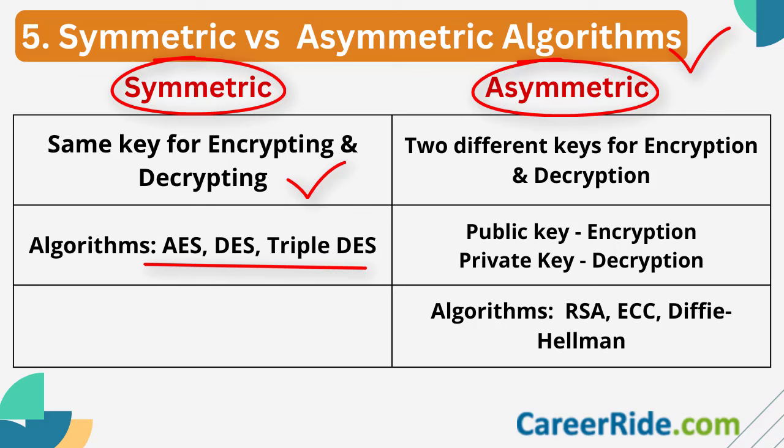These symmetric algorithms are used to secure your financial transactions, personal information, etc. This process is comparatively faster and efficient. Coming to asymmetric encryption, which is also called public key cryptography — the main difference is that two different keys are used for encryption and decryption. A public key is used to encrypt the data while a private key is used to decrypt it. Even the sender doesn't know the recipient's key, making the whole system very, very secure.